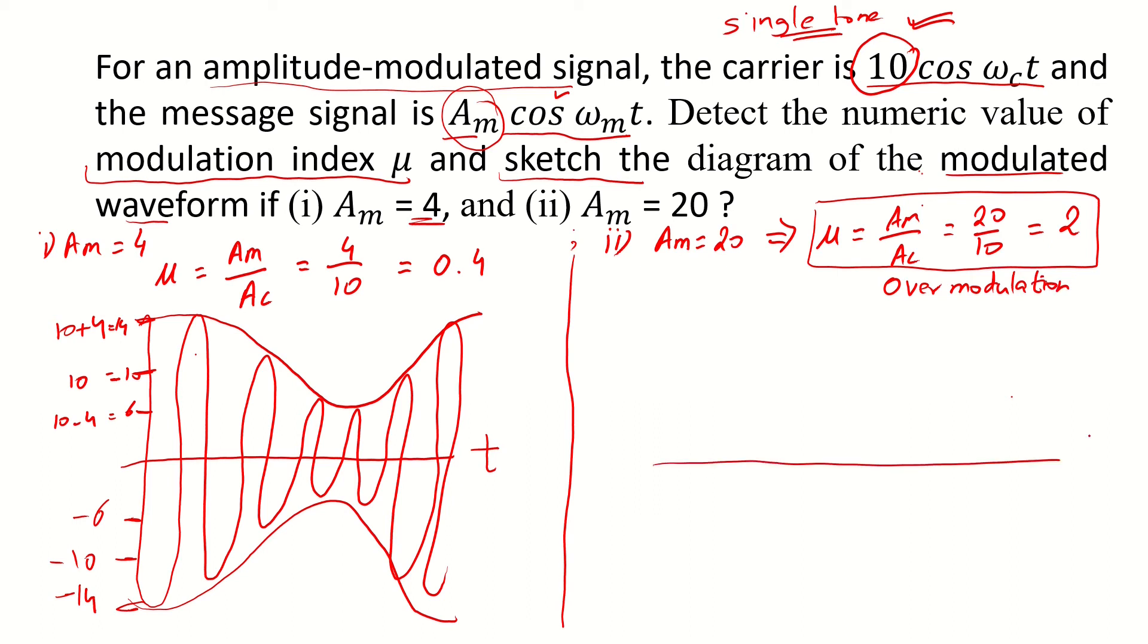Now the waveform in this case of over modulation - the carrier is again having an amplitude of 10. So the positive lobe would be 10 plus 20 which is 30 and the lower lobe would be 10 minus 20, and that would be equivalent to minus 10.